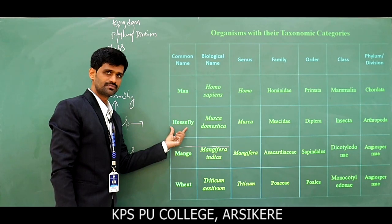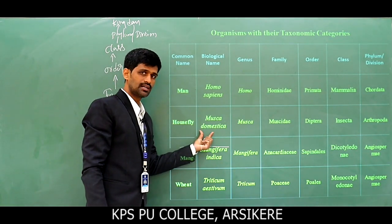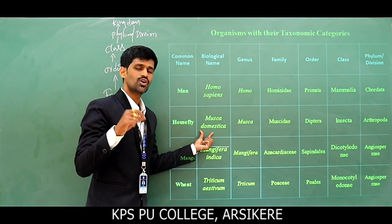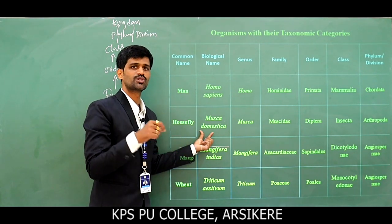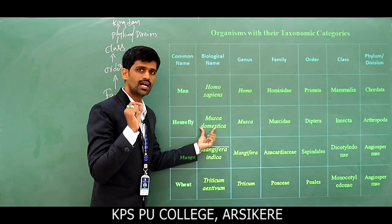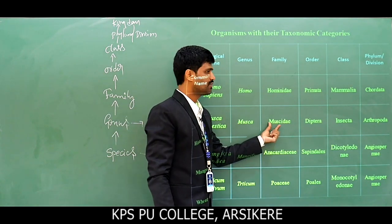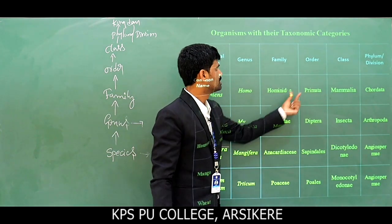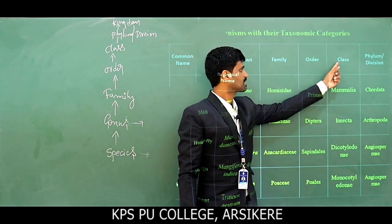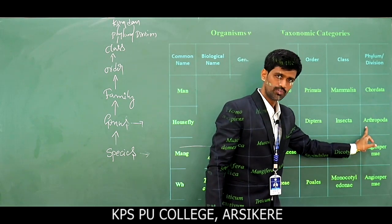Second example: common name — Housefly; biological name — Musca domestica; genus — Musca; family — Muscidae; order — Diptera; class — Insecta; phylum — Arthropoda.